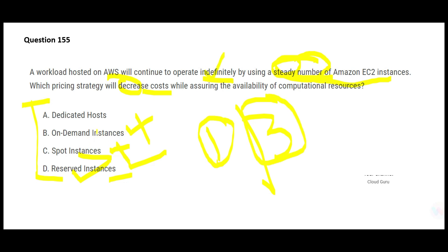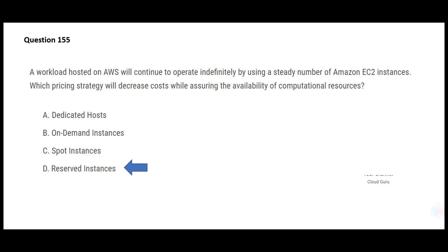On-Demand Instances would be expensive. If you know you'll need a steady number of EC2 instances indefinitely, there's no reason not to commit to a one- or three-year Reserved Instance period. On-Demand is for flexible, short-term workloads. Dedicated Hosts give you full control over the hardware, but that's over-provisioning — it will increase your cost, not decrease it. To decrease cost, stick with Reserved Instances. If you just need four pieces of bread, don't order twelve. That is my final answer.